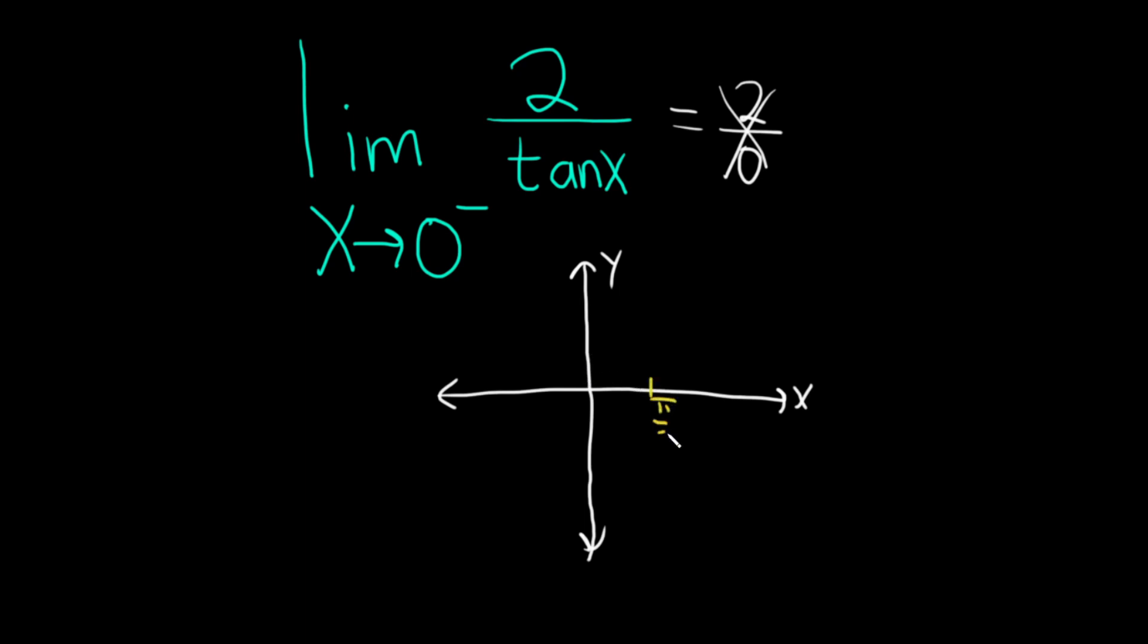The graph of tangent has infinitely many vertical asymptotes. It has one here at π/2, another one at 3π/2, one at negative π/2, and one at negative 3π/2. It has infinitely many—it just repeats and repeats. It's periodic with period π.